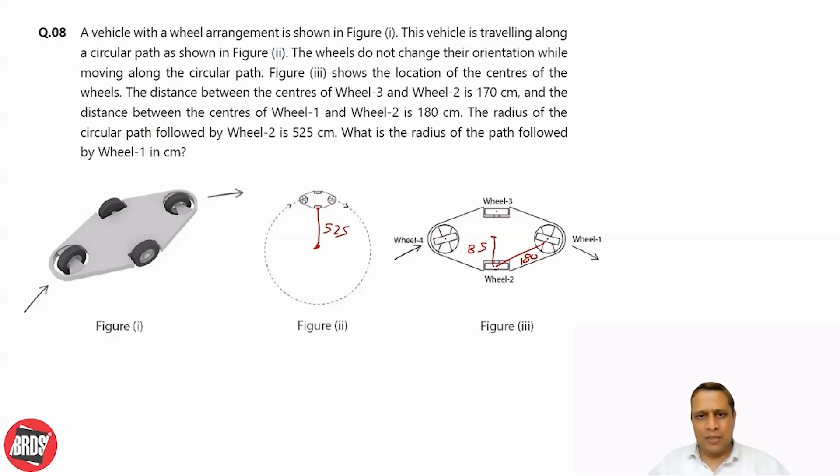In this diagram, if I draw the radius, it should be somewhat like this. This is 525. This is the path. We are asking what is the radius of the path followed by wheel 1 in centimeters. Wheel 1 is here, so we need to know this radius.